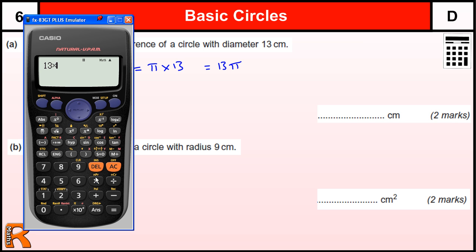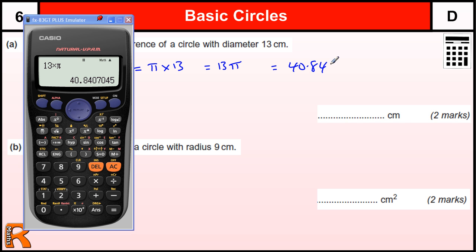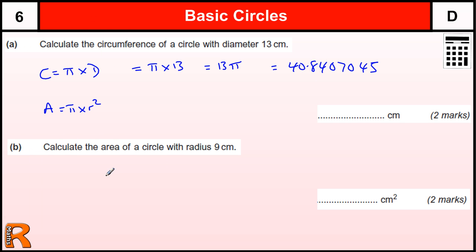But a lot of people like to put it in terms of a decimal — use the pi button on your calculator. Your calculator takes it as 13 pi, but it's also equal to 40.8407045. Therefore, if you have anything that's rounded correctly, like 41 or 40.8, any of those will give you two marks.